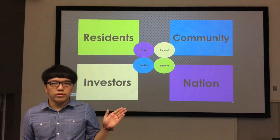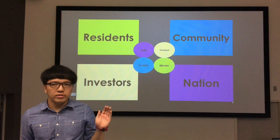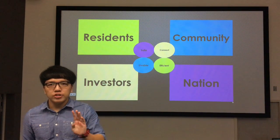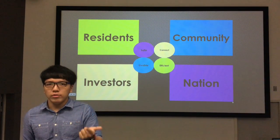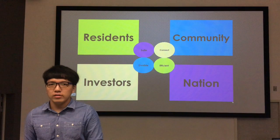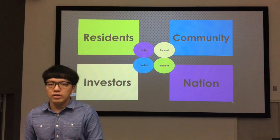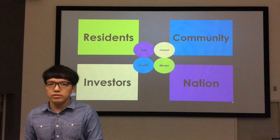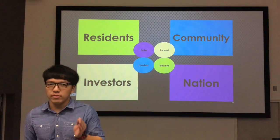This is our smart city master plan ecosystem. They are divided into four main parts, which are residents, community, investors, and nation. Firstly, for safe: residents are safe and secure. It is also a liveable community with world class amenities and a healthy sustainable environment. The convenient technology also enhances quality of life.